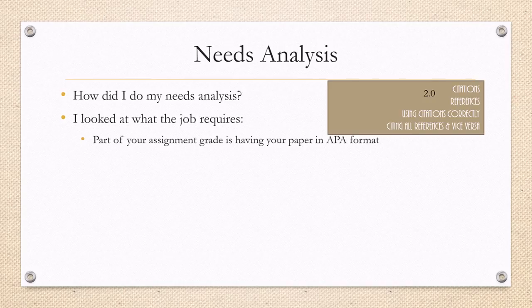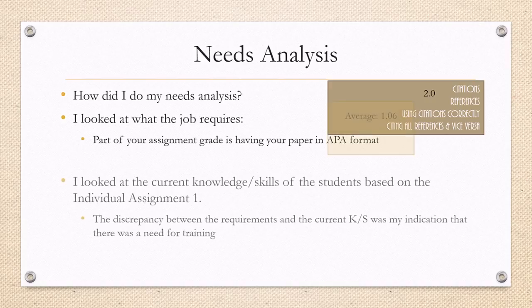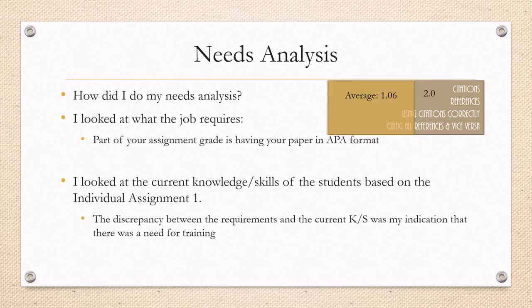The way this was graded, there were two full points that was the expected performance. I looked at the current knowledge and skills of the students, and what I found was that on average, the students received 1.06 points out of the 2.0 points available. This discrepancy between the requirements and the current knowledge and skills was my indication that there was a need for training.